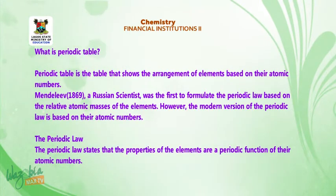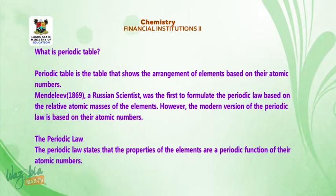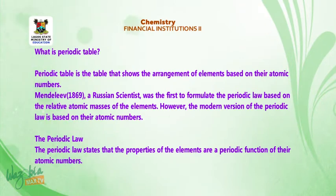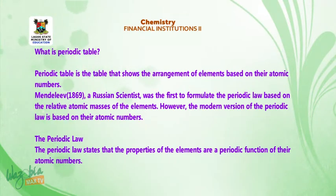Periodic table is a table that shows the arrangement of elements based on their atomic numbers. Mendeleev, in 1869, a Russian scientist, was the first to formulate the periodic law based on the relative atomic masses of the elements. However, the modern version of the periodic law is based on their atomic numbers.